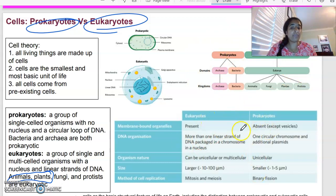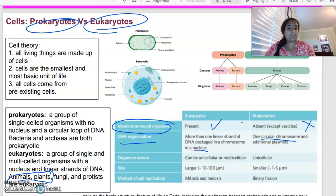The main other things to keep note of are the major differences between eukaryotic and prokaryotic. Knowing about membrane-bound organelles—in eukaryotes they're present, but in prokaryotes they're not there. In terms of DNA and where it's found, in eukaryotes it's in the nucleus, whereas in prokaryotes it's usually free-floating and circular. In terms of organism nature, eukaryotes can be unicellular, made up of one cell, or they can be multicellular, made up of many cells, whereas prokaryotes are unicellular. In terms of size, eukaryotes are a lot larger, prokaryotes are a lot smaller. Their method of cell replication—eukaryotes undergo mitosis and meiosis, whereas prokaryotes undergo binary fission, which we will get to.